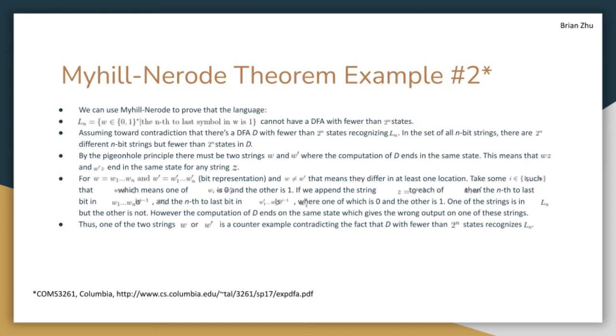If we take our bit representations of W and W', where W does not equal W', this means that they differ in at least one location. If we take that location i, call it W'i, this means that one of those bits is 0 and the other is 1. If we append the string z to each of those W and W' strings, then the nth to last bit in both strings is either 0 or either 1. They cannot be both 0, they cannot be both 1.